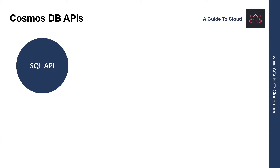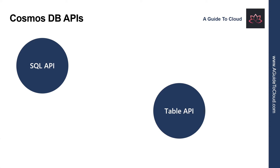So let's understand what is a Table API. This interface enables you to use the Azure Table Storage API to store and retrieve documents. The purpose of this interface is to enable you to switch from table storage to Cosmos DB without requiring you to modify your existing applications.